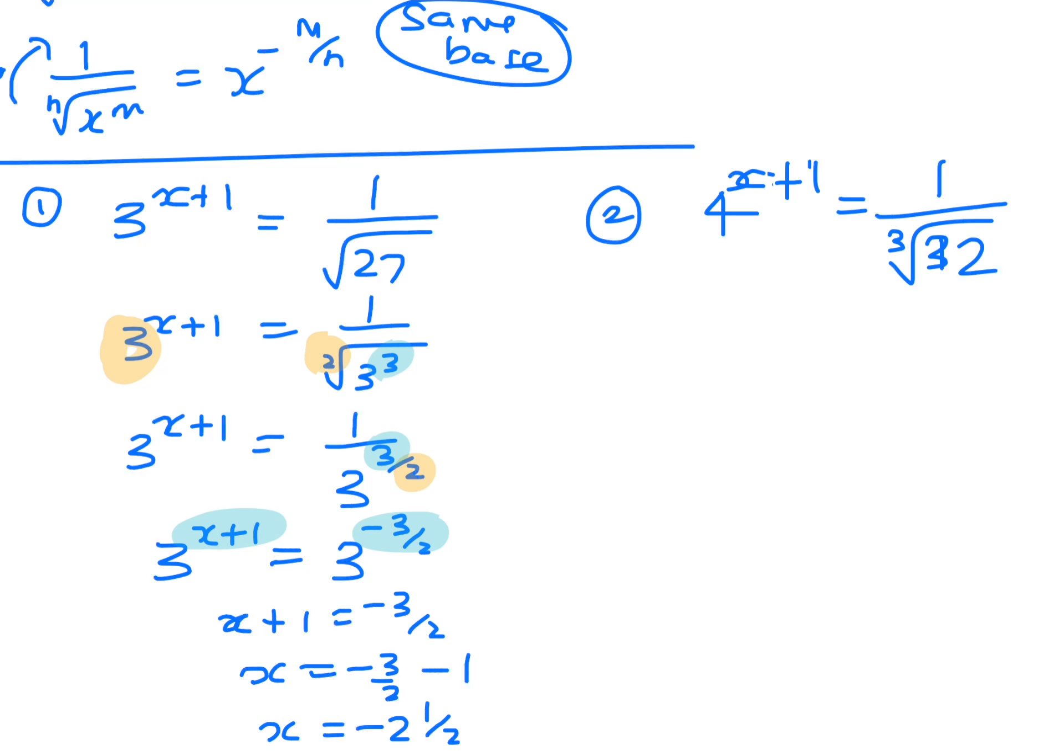So the base that we'll be looking at when we're doing 4 and 32 is a base 2, because it goes 2, 4, 8, see how I'm doubling it, 16, 32, 64. It is good to be familiar with these. If not, you just put it into your calculator until you find it. 4 is 2 to the 2, to the x plus 1, and this is 1 over the cube root of 2 to the power of 5, because 32 would be to the power of 5.